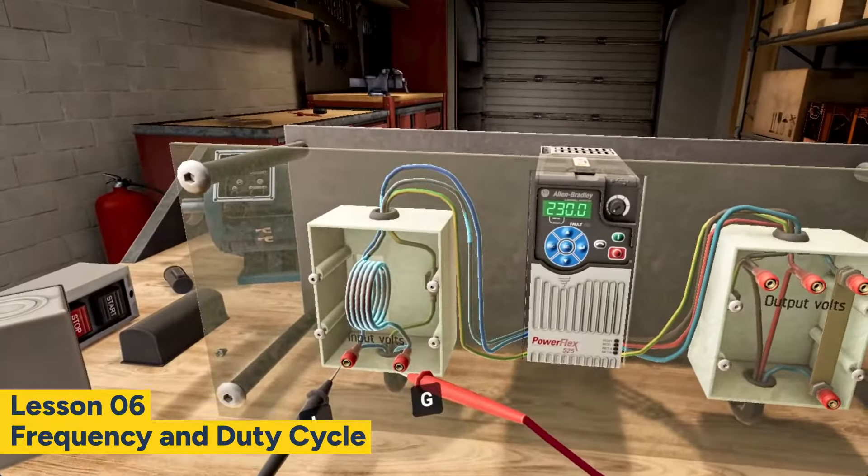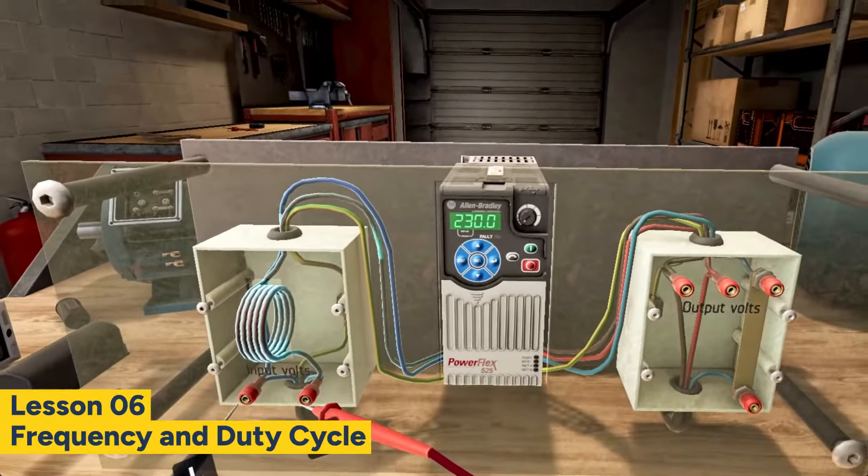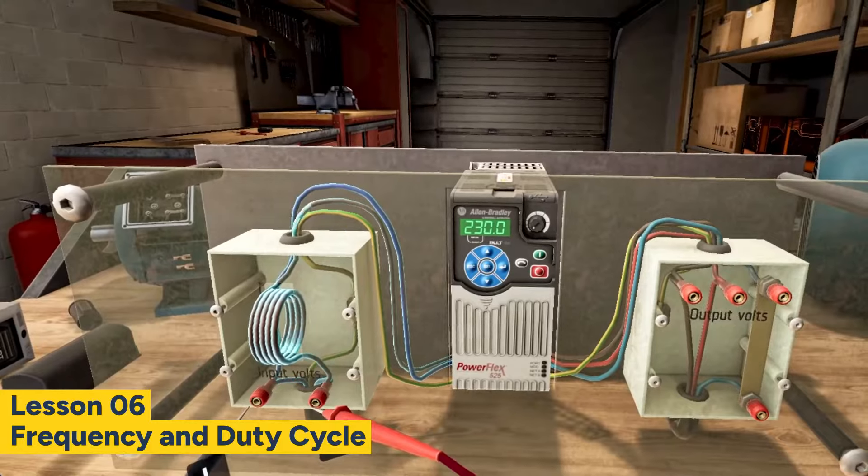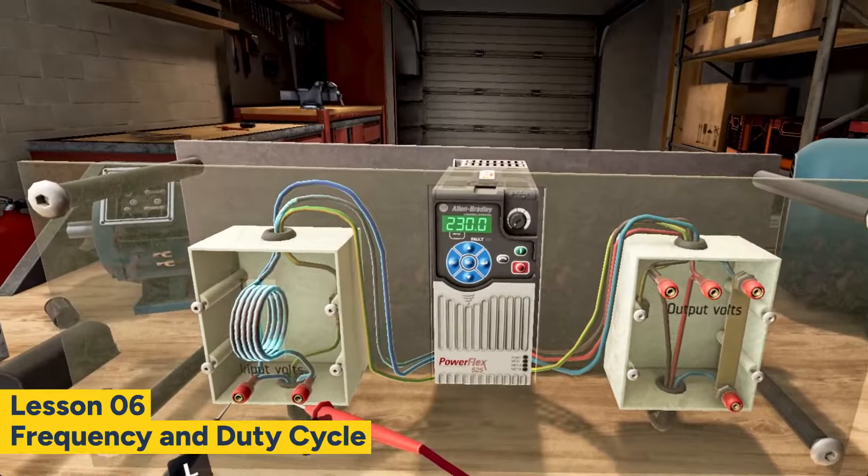If we take a look at the display on our VFD, we can tell that the output voltage is set to 230 volts. Now let's go ahead and check the voltage of the output of the VFD. Reconnect the test probes across L1 and L2 terminals.